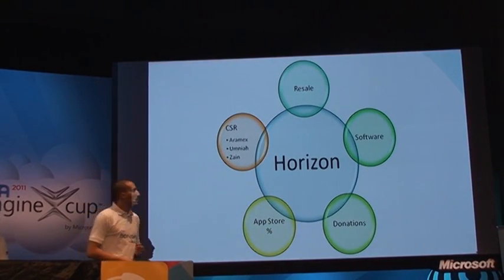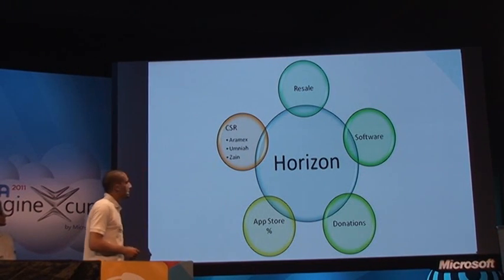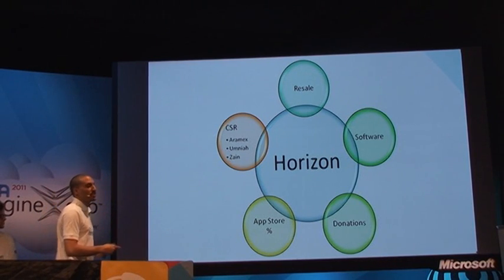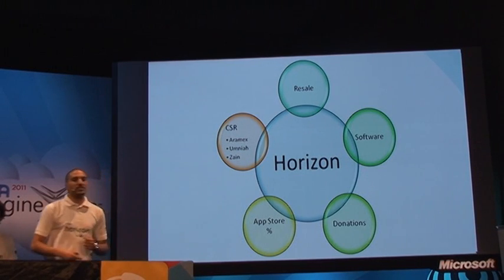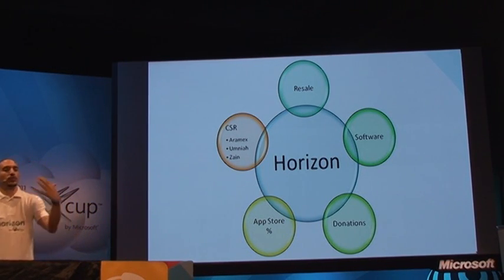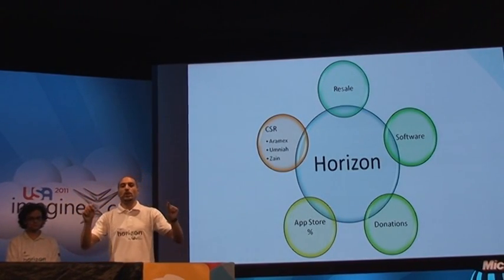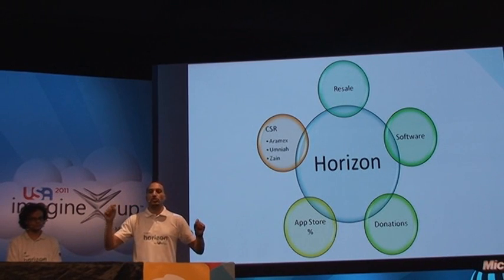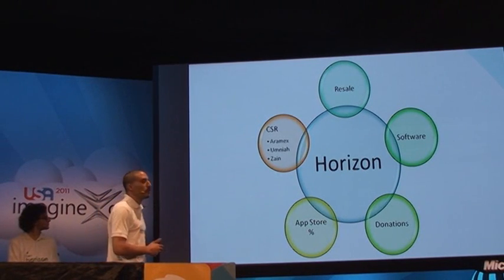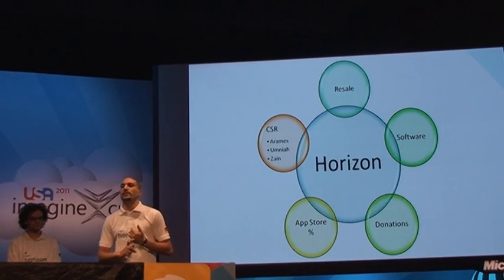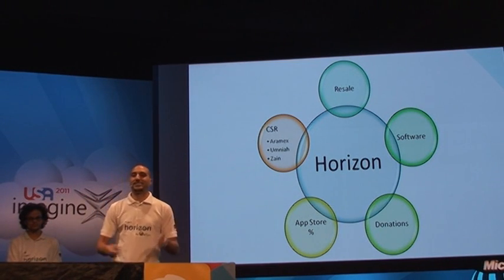How will we sustain our business? We have five pillars: software licensing, hardware resale, donations — which we're actively pursuing — App Store percentage (taking a small cut from developers posting applications, while patients who write code are not charged), and CSR. We've already contacted Aramex, one of the biggest shipping companies in the world, and we're in talks with Omni and Zain telecom companies to get the best deal.